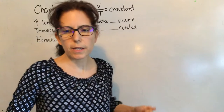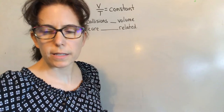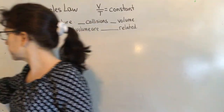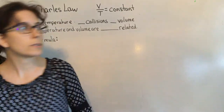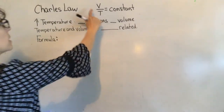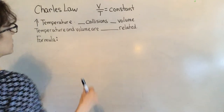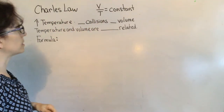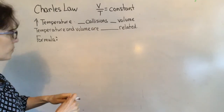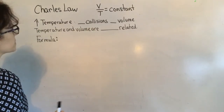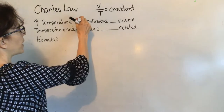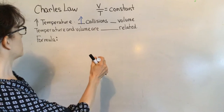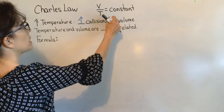Alright, High Point Chemistry, let's have your calculators ready — it is time to do some calculations with Charles's Law. Charles's Law is represented by volume over temperature equals a constant number. So if we increase the temperature, the molecules move faster, we have more collisions, and you will increase the volume.